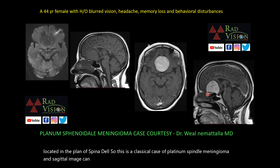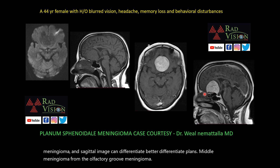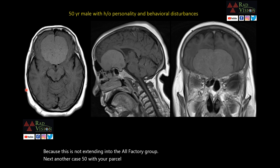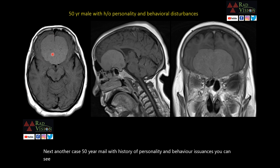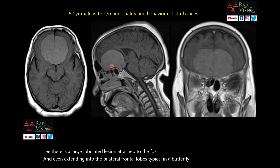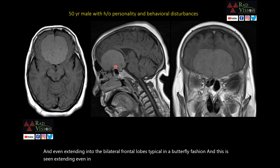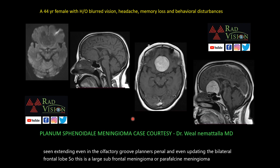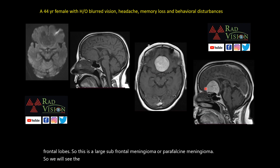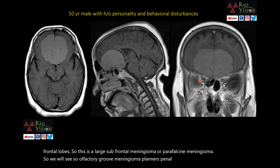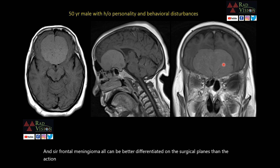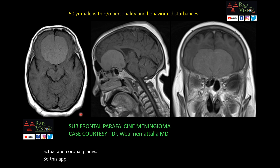Sagittal imaging better differentiates planum sphenoidale meningioma from olfactory groove meningioma. Next case: a 50-year-old male with personality and behavioral changes. There is a large lobulated lesion attached to the falx extending into the bilateral frontal lobes in a butterfly fashion, involving the olfactory groove, planum sphenoidale, and abutting the bilateral frontal lobes. This is a large subfrontal or parasagittal meningioma. Olfactory groove, planum sphenoidale, and subfrontal meningiomas are all better differentiated on sagittal planes than axial or coronal planes.